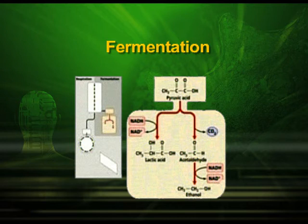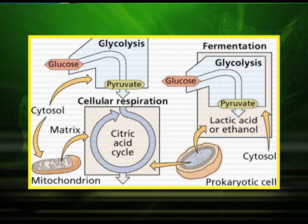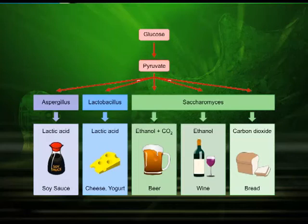Fermentation starts with pyruvic acid. In the absence of oxygen, pyruvic acid is converted to lactic acid, or it may be converted to acetaldehyde, which is finally converted to ethanol — that is alcohol. Alcohol is made by fermentation of fruits or fruit juices. That is why you get a peculiar smell when sugar and water are left in a closed container for two days.